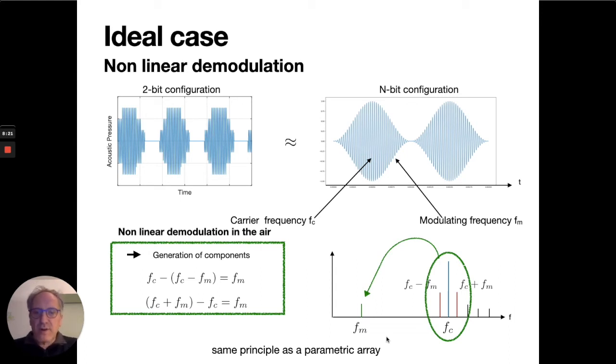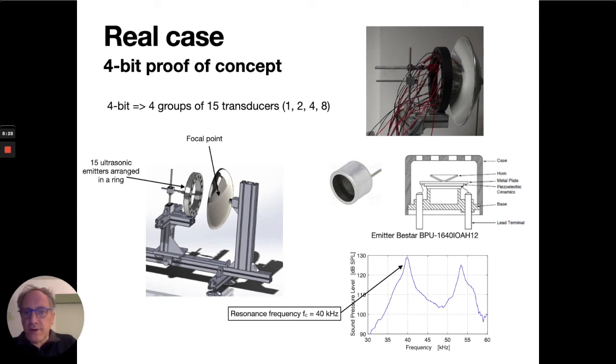This is how the system works in theory. Now let's see what it is in practice. To check the feasibility of this digital loudspeaker, we developed a first experimental prototype designed to directly convert a 4-bit digitized signal. It uses 4 groups of 1, 2, 4, and 8 transducers—15 transducers total—facing a parabolic reflector. An omnidirectional microphone is set at the focal point, 50 cm from the transducers. The transducers are piezoelectric emitters with a resonance frequency at 40 kHz, which will be the frequency of the ultrasound carrier.